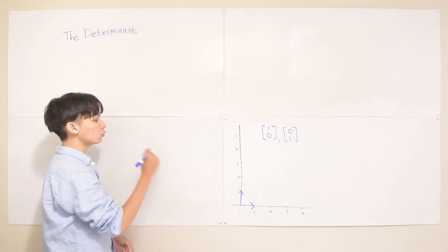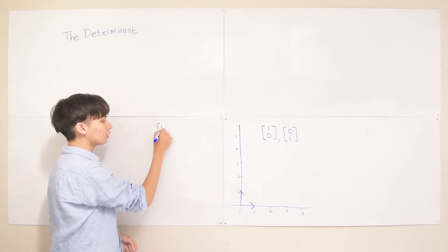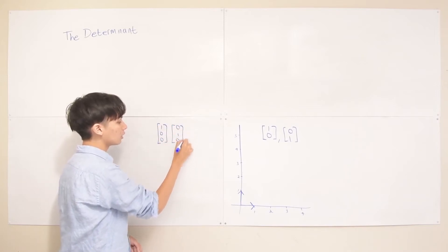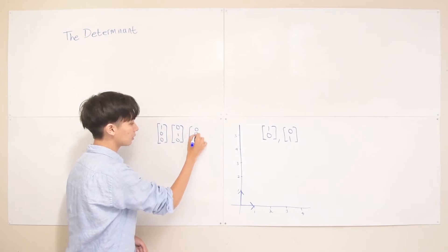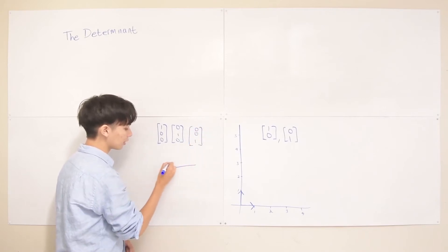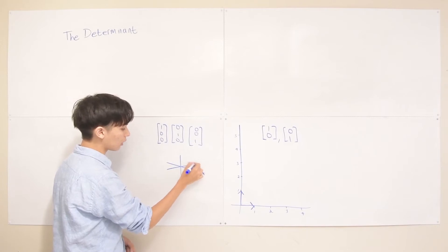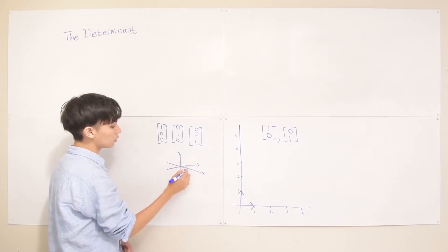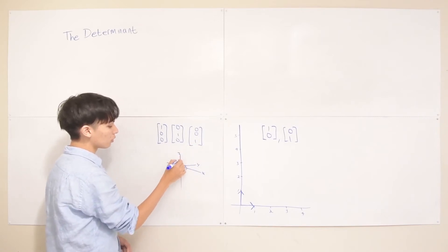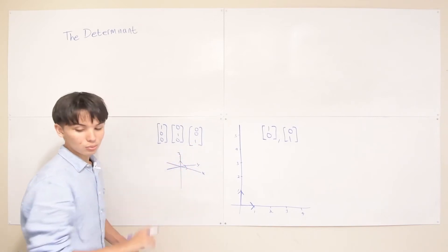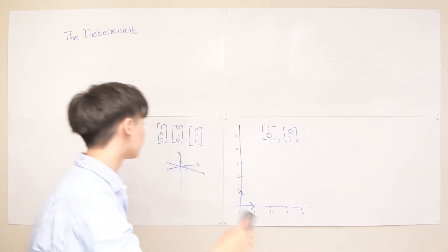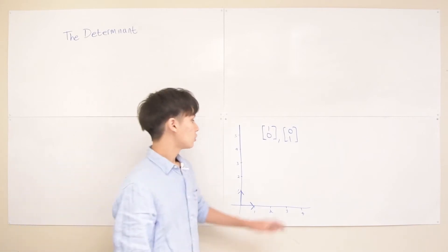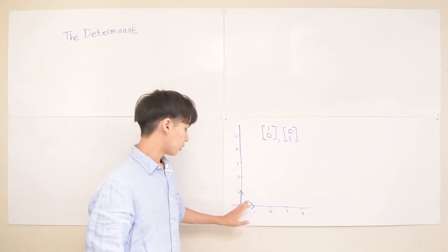In three dimensions, we'd have three unit vectors, each going 1 in the direction of x, y, and z. So [1,0,0] would go in the x direction, [0,1,0] would go in the y direction, and similarly for z. That's all I wanted to cover with the unit vector, just to get that terminology down.